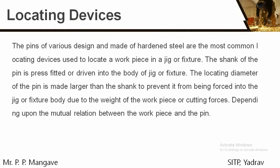Now, what is a locating device? Pins of various designs are made of hardened steel and are the most common locating devices used. The shank of the pin is press-fitted or driven into the body of a jig or fixture. The upper part is used for locating the workpiece. The locating diameter of the pin is made larger than that of the shank — that is, the upper part in contact with the workpiece has a larger diameter than the part inserted inside the jig or fixture.